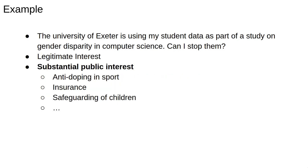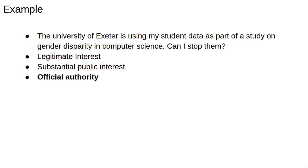There's also another category where data processing has what's called substantial public interest. There are a large number of conditions for this — 23 in fact — and the examples are what you would expect, from calculating insurance claims to preventing crime. In any of these cases, an organisation like a university can be exempt from some conditions of GDPR. In this case, the university might argue that this research was related to equality of opportunity in treatment, which is one of the conditions for being of substantial public interest. There are other examples, like investigative journalism, or as an exercise of official authority like a police investigation, where, if the organisation can prove that they have compelling legitimate grounds that override your interests, rights and freedoms, they can process your data over your objections.